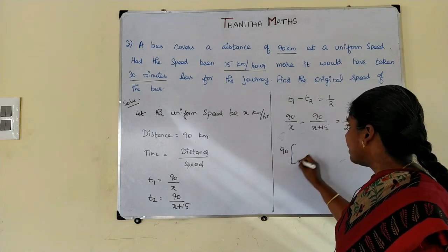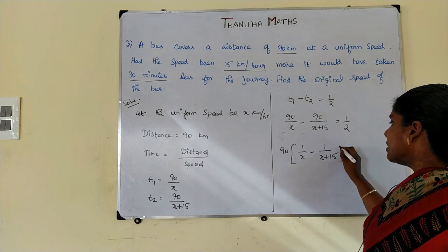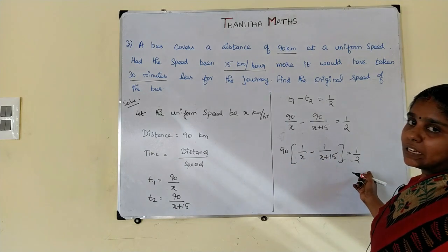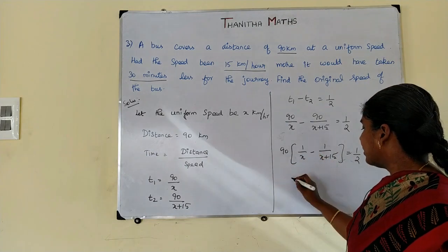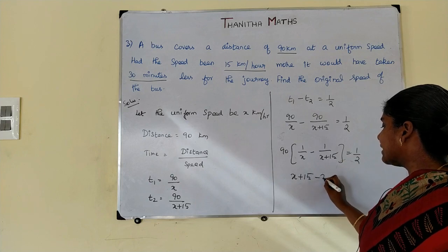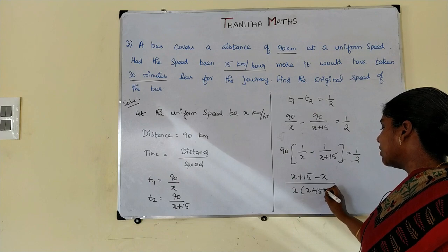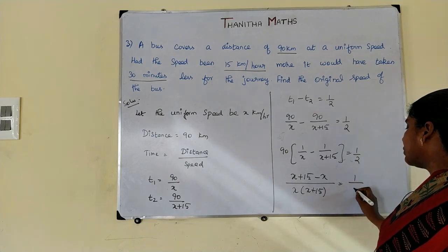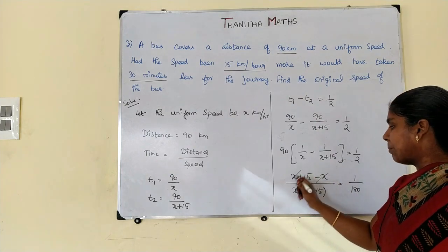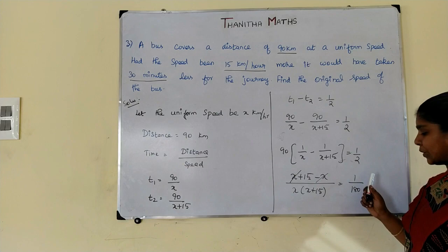So 90 times the quantity one by x minus one by x plus 15 is equal to one by two. On the left-hand side: x plus 15 minus x, all over x times x plus 15, is equal to one by two into 90. Two times 90 is 180. The x terms cancel, leaving 15 over x times x plus 15, and the right-hand side becomes 180.